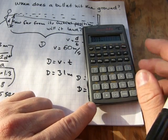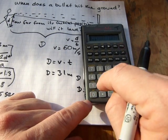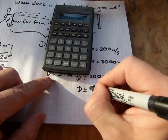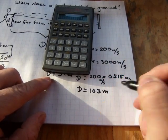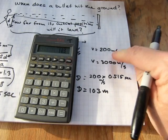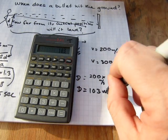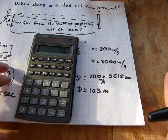And the distance will be 0.515, oops I forgot the decimal, 0.515 multiplied by 200, 103 meters. If the bullet is traveling at 200 meters per second speed, it's going to hit the ground at 100 meters from you. That's about 100 yards.